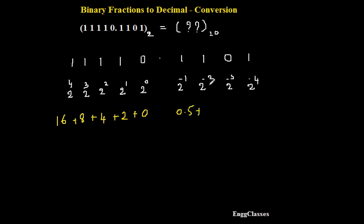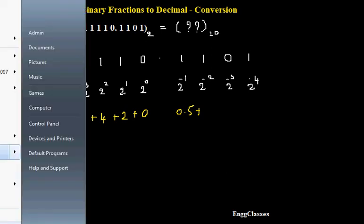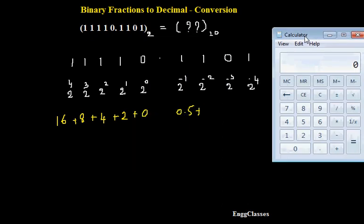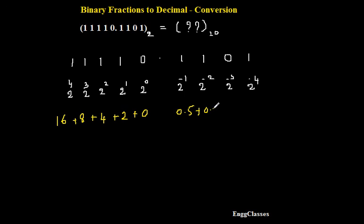Again I need to add this with the next number. 2 to the power minus 2. What is 2 to the power minus 2? It is nothing but 1 divided by 4. Let me consider the calculator. 1 divided by 4 turns out to be 0.25. So let me write 0.25.